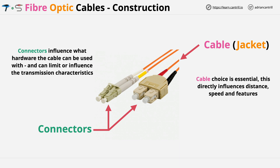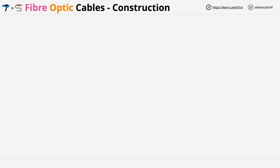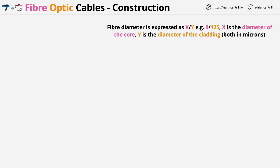I'm not going to detail all of the different fibre cable types in this lesson. Instead, I've included a link attached to this lesson which gives you a good overview of the common cable and connector types within the industry. Now I want to spend a few minutes talking about the physical construction of fibre cables. When we're talking about fibre cable, you'll see it referred to using an X slash Y notation, for example 9 slash 125. This defines two parts of the cable. The first part is the diameter of the core in microns, and the second part is the diameter of the cladding — that's the bit that surrounds the core.